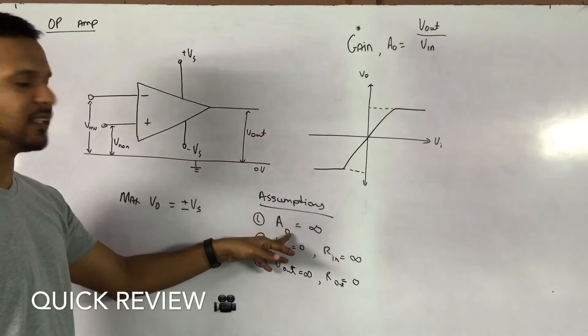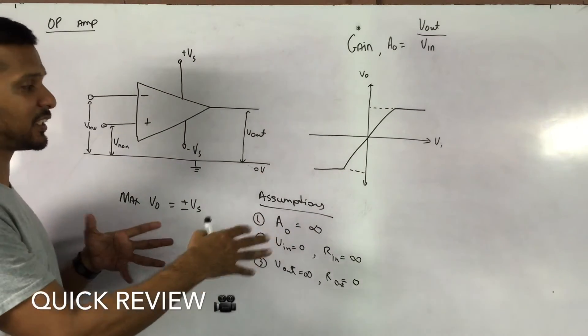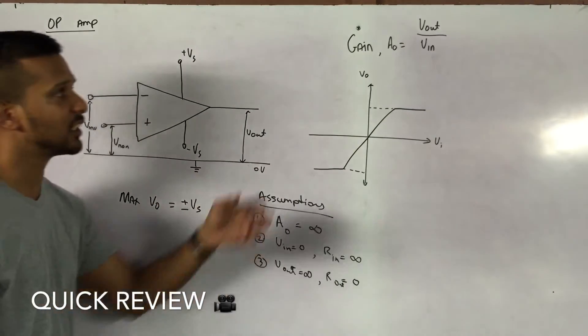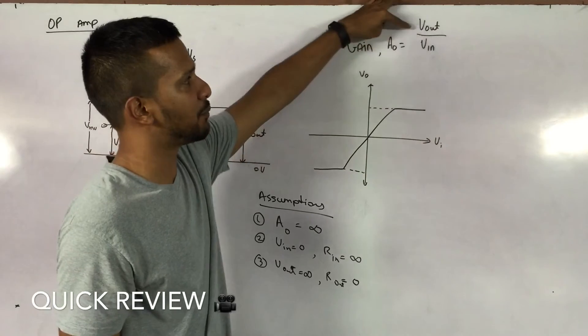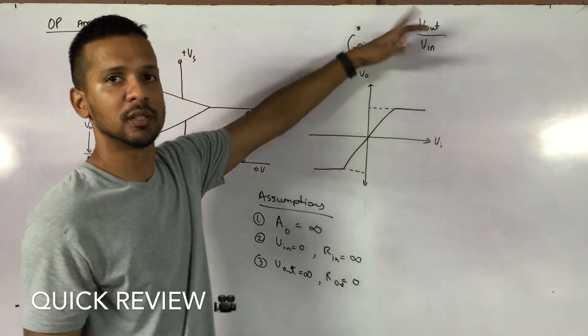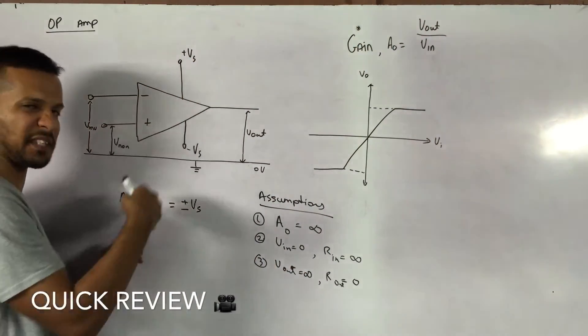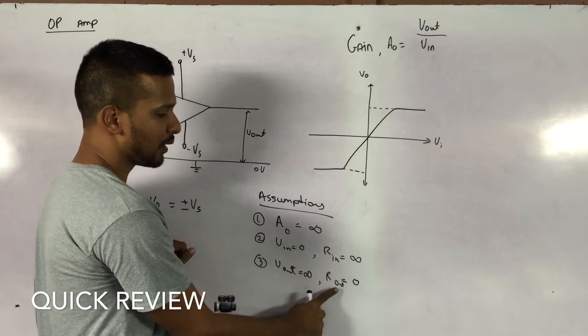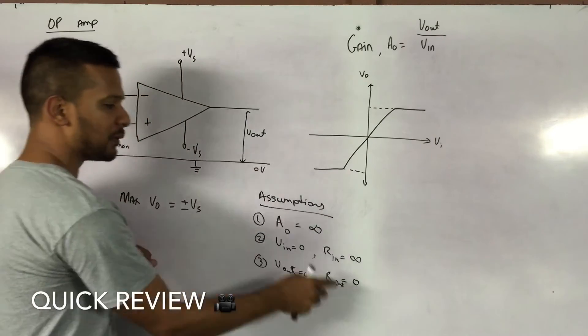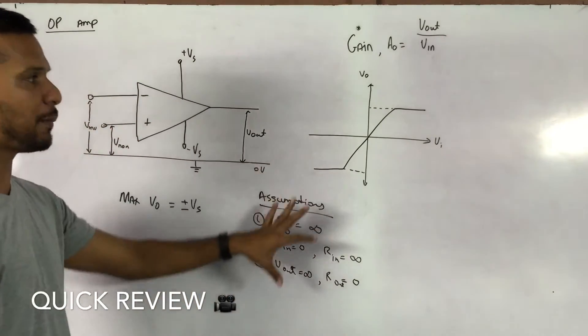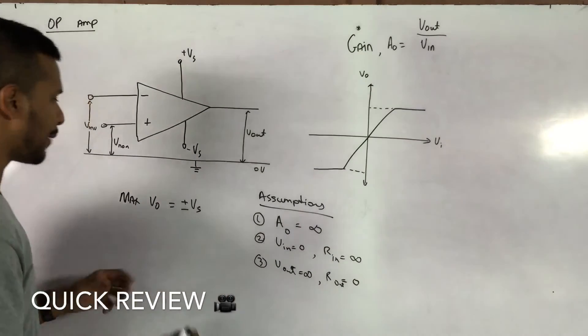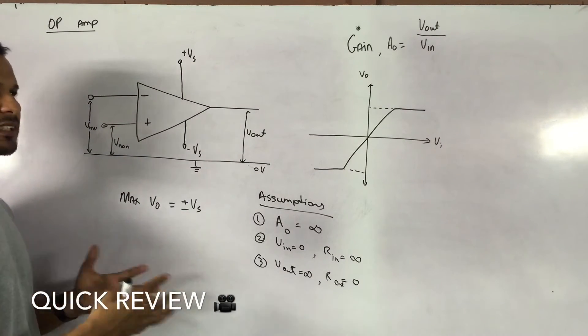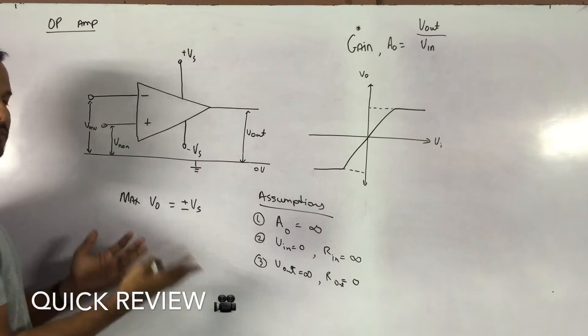The assumptions that the gain is infinity, a very large gain. Input is very small. Output is very large. So for us to get infinity here, this must be infinity, this must be zero. To get zero going in here, we have very high impedance or resistance. So the resistance is infinity and the resistance output is zero. These are the three basic assumptions of the op-amp. And the op-amp has a maximum V out of plus or minus Vs. There is no way for us to have an output that is larger than supply.